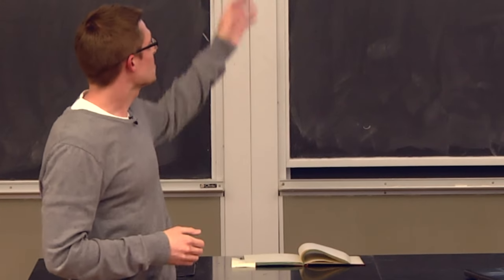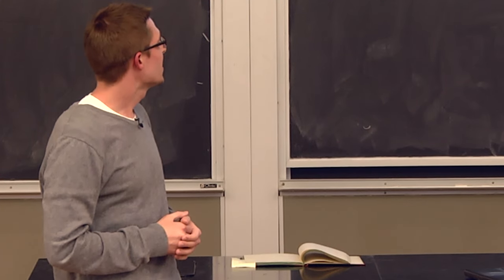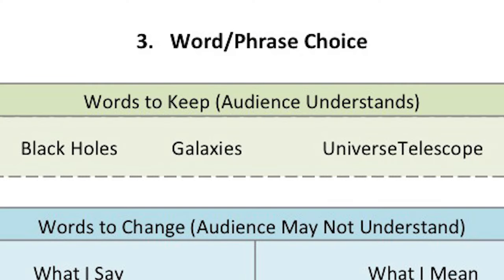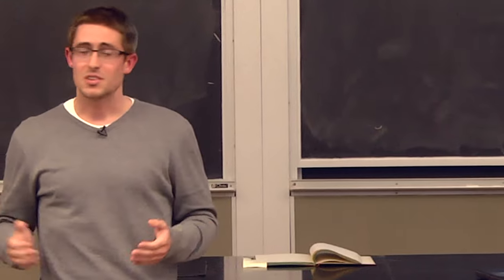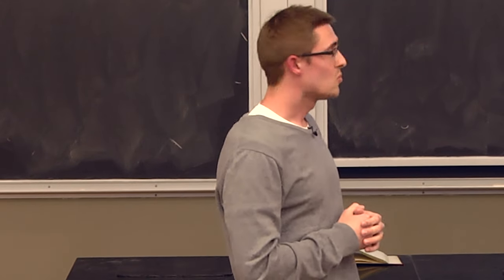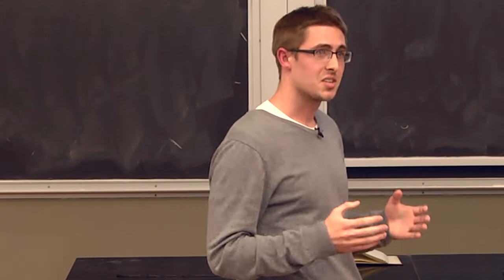I've listed examples of words I said during the speech that work well for a general audience. Black holes are a perfect example — they're part of society, written about in the news, in movies, in science fiction. Everybody knows what black holes are, so you don't really need to explain them. Other examples: galaxies, universe, telescope — in my opinion, these are all words that people will likely understand, and therefore you can keep them.